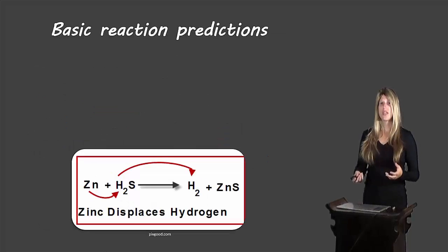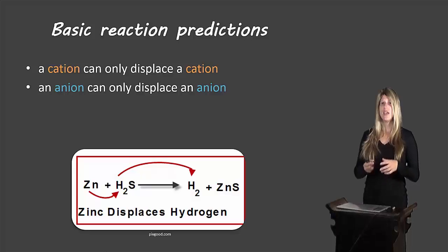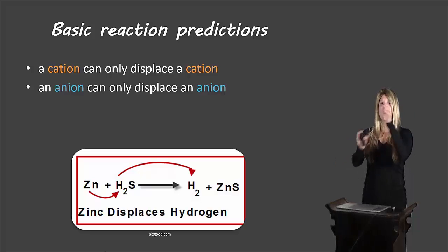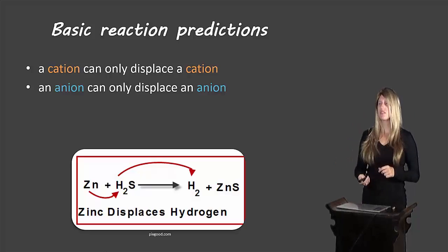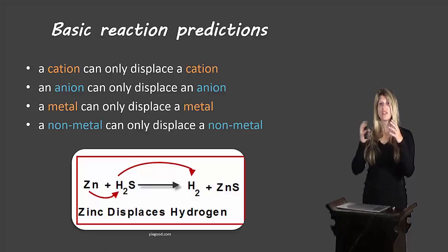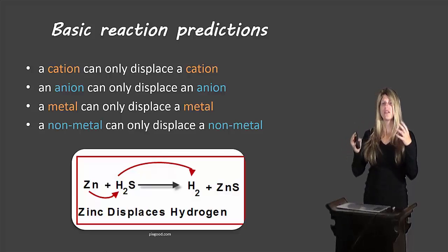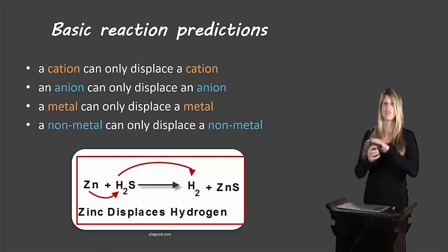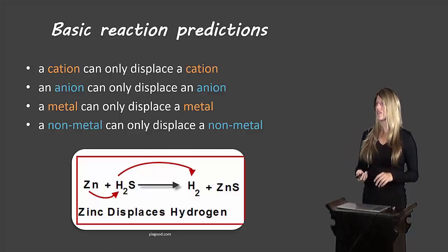So how do we predict these types of reactions? Cations can switch places with other cations, anions can switch places with other anions, but cations and anions cannot switch places with each other. Similarly, metals can switch places with other metals, non-metals can switch places with other non-metals, but a metal and a non-metal cannot switch places with each other.